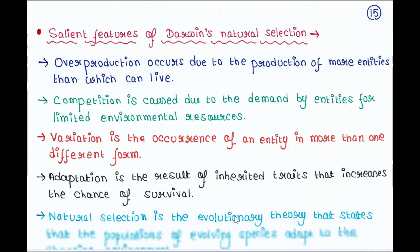We will see some salient features of Darwin's natural selection. First, overproduction occurs due to the production of more individuals than can live. Suppose in a particular habitat only 50 birds can survive, but they become more than 50 — that creates a problem.